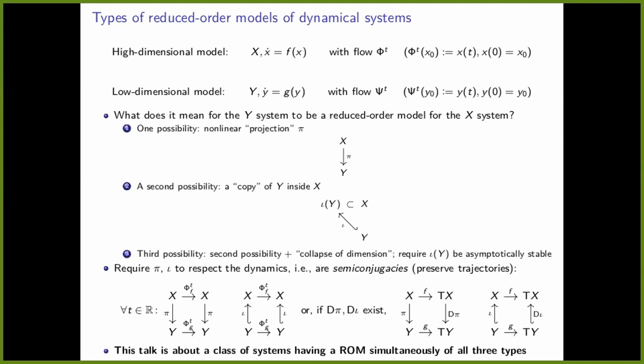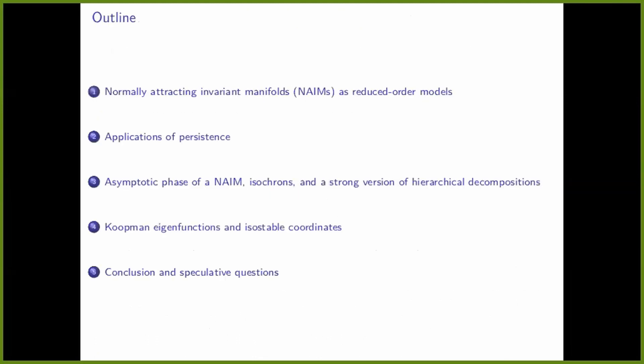I'd like to introduce the basic definition and some intuition about NIMs and tell you about a couple of properties. It will be immediate that these are one of those types of reduced order models. Then I'd like to tell you about an application of this to studying animal or robot locomotion. And then I'll go on to tell you about why NIMs are actually all three of those reduced order models in one.